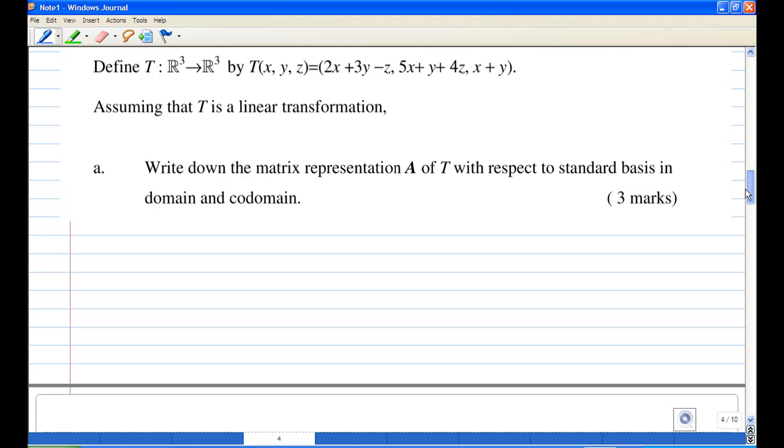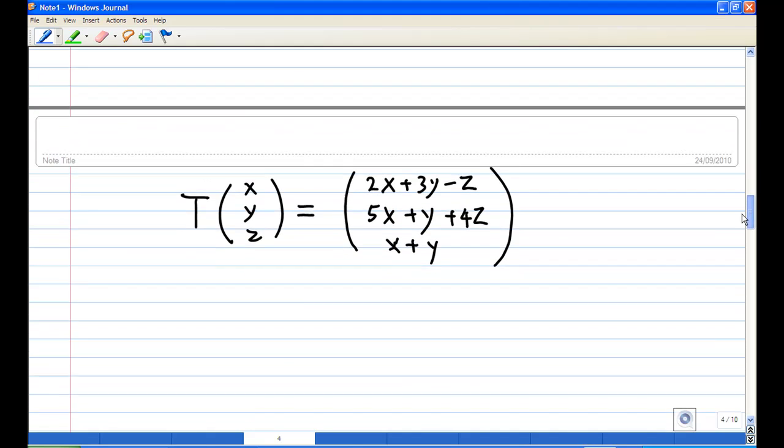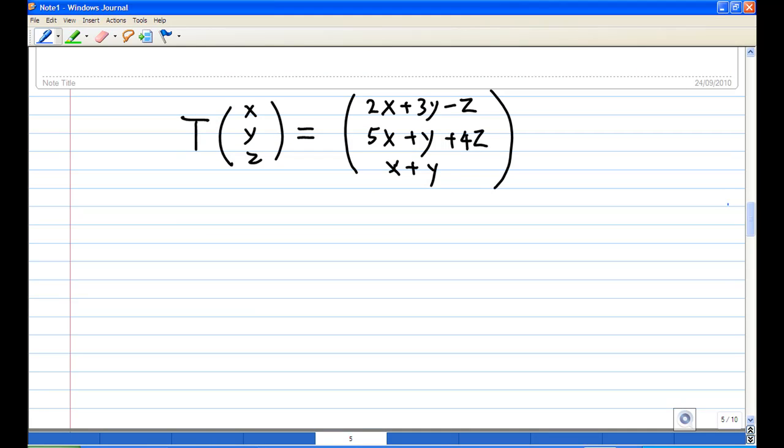So now I'm going to rewrite the transformation into column form. In order to find the matrix A, I need to find T(e₁), which is T of (1,0,0). That means x = 1, y = 0, z = 0, and I get (2, 5, 1).